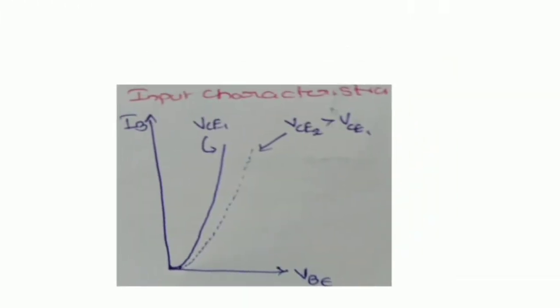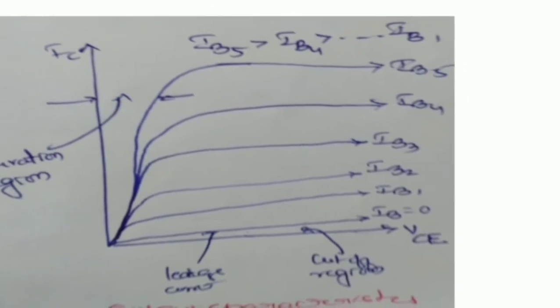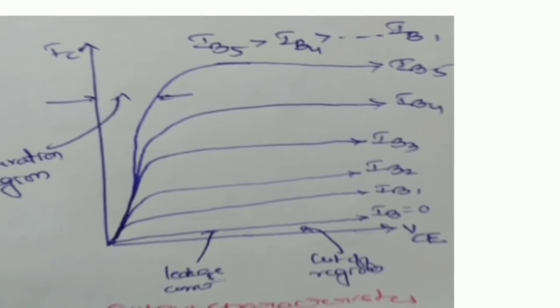Similar to the input characteristics, we can observe the output characteristics. For output characteristics, the relationship is between the output current IC versus VCE output voltage. You can observe that the cutoff region is below, where IB equals 0, with leakage current present. The saturation region is also visible in the diagram.